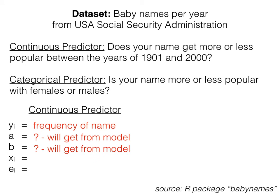Our a, or intercept, we don't know. We'll get that from our model. Our b, or slope, we also don't know. We'll get that from our model. Our xi is a given year. And finally, our residual, we also don't know. We'll get that from our model.